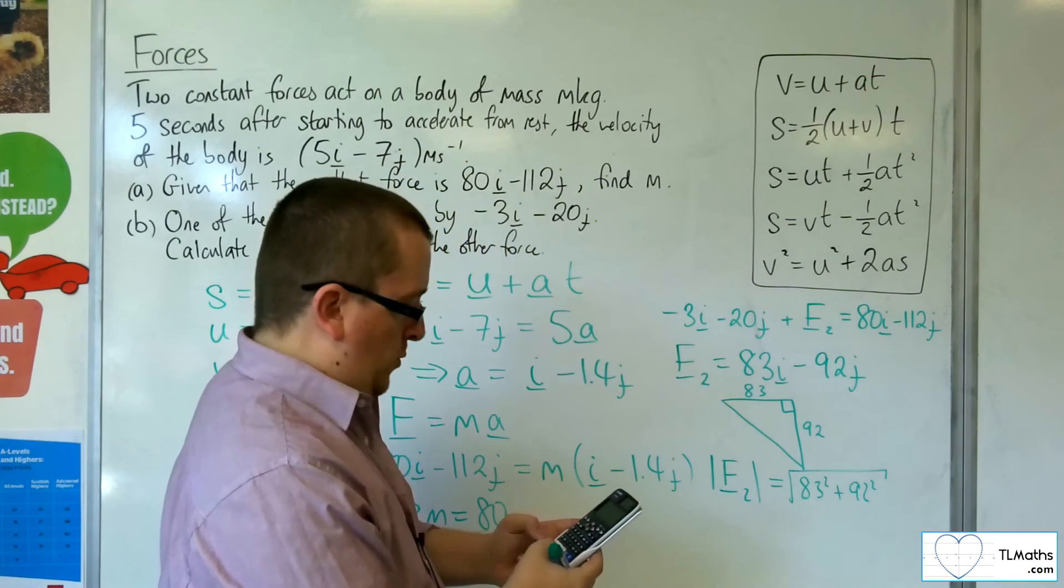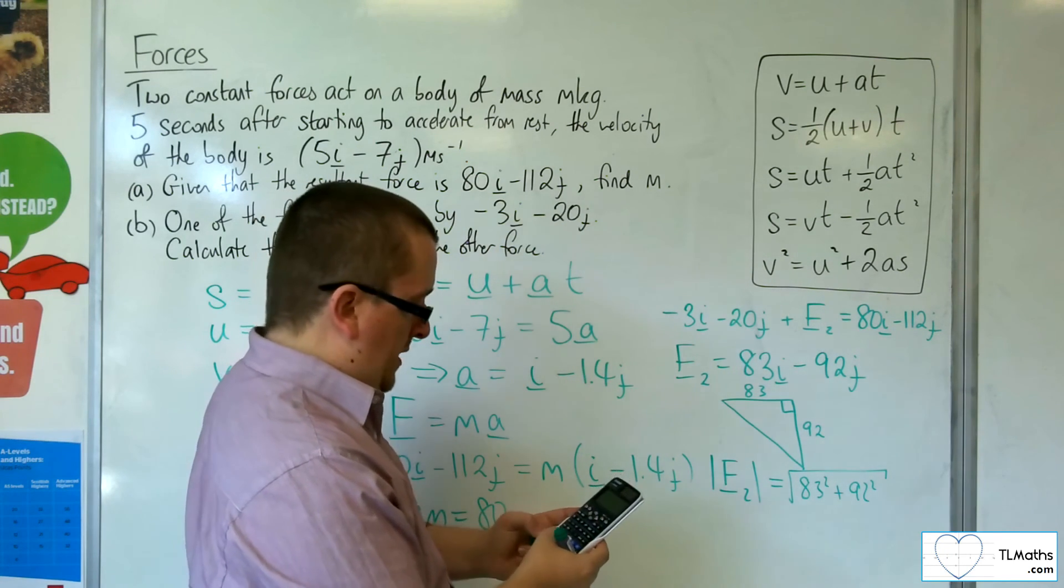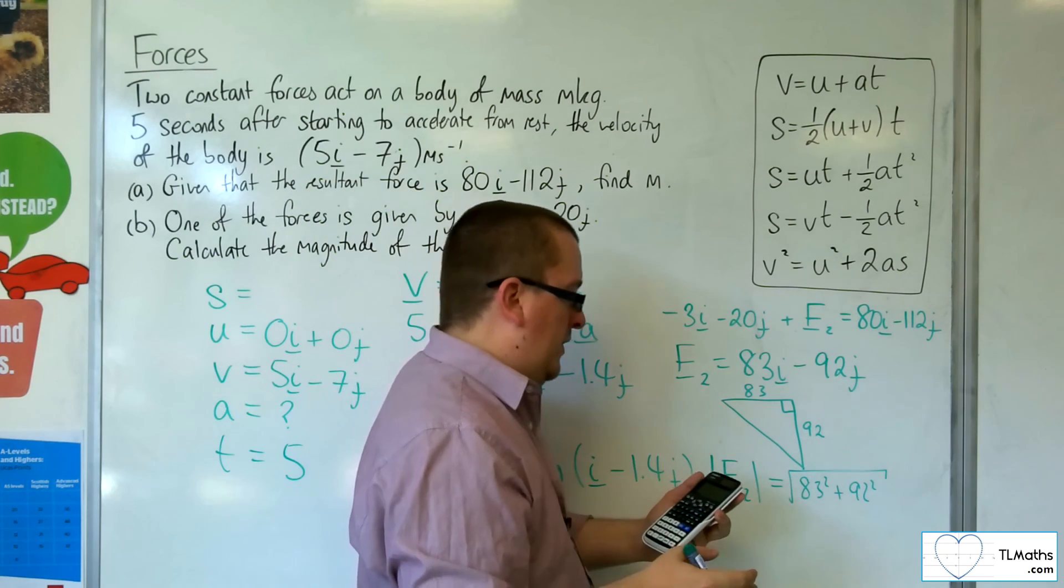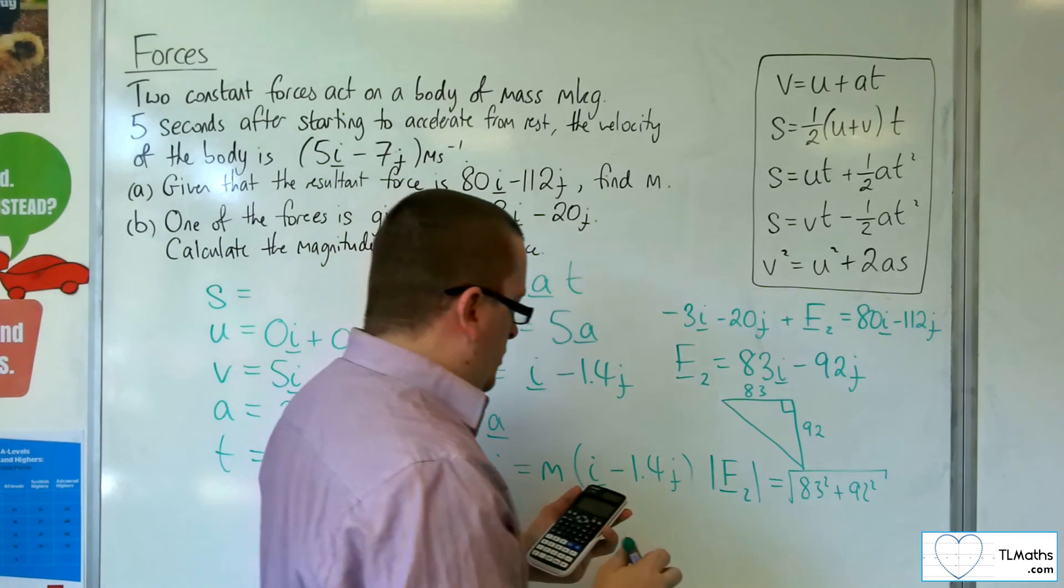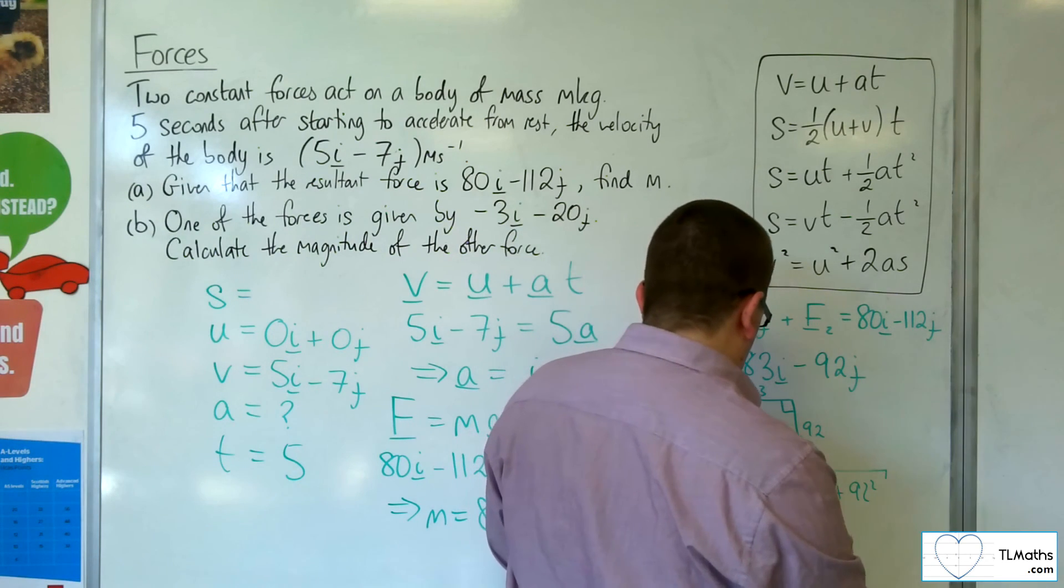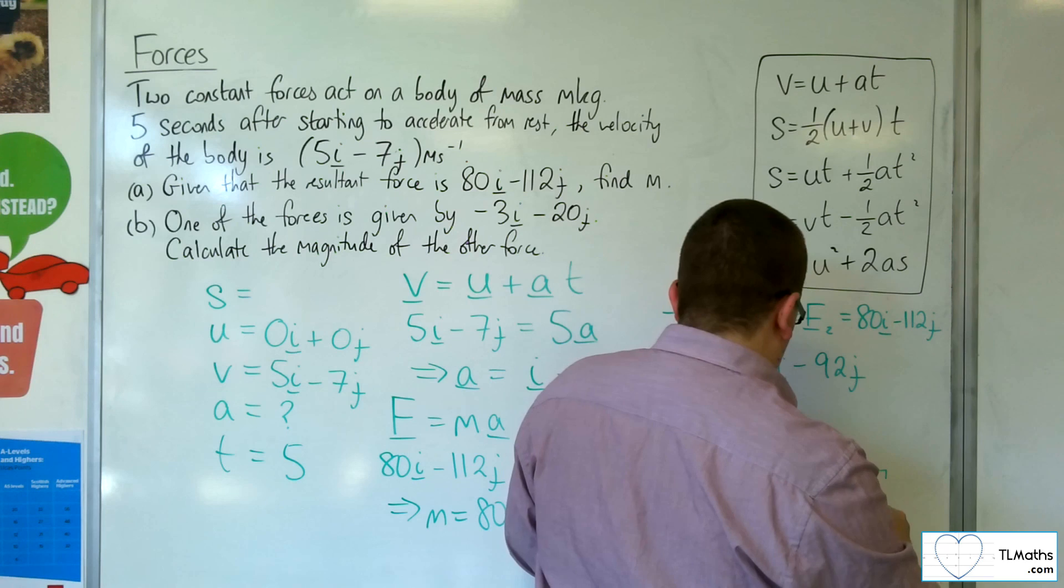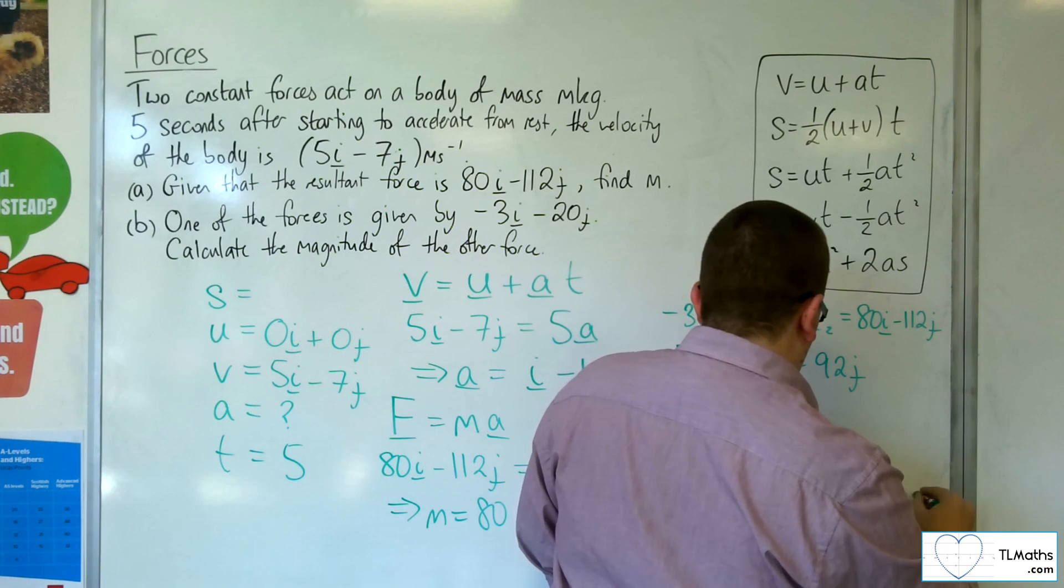So square root of 83 squared plus 92 squared gets me 123.907, etc. So 124 newtons to 3 sig fig.